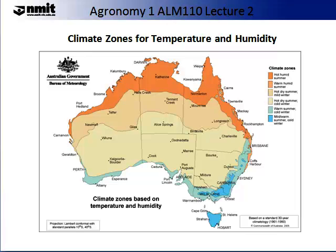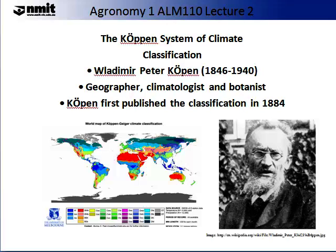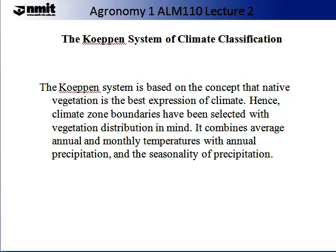The Köppen system of climate classification is based on the concept that native vegetation is the best expression of climate. Hence, climate zone boundaries have been selected with vegetation distribution in mind. It combines average annual and monthly temperatures with annual precipitation and seasonal precipitation. Here is a later published map based on Köppen's classification, modified on major classification groups. Australia's climate ranges from temperate — ideal for growing many C3 crops — through to tropical and equatorial, more suited for some C4 and CAM plants. These plants exhibit specialisations to these habitats. The variation in climate discussed previously in this lecture is reflected by the huge variation in native vegetation.